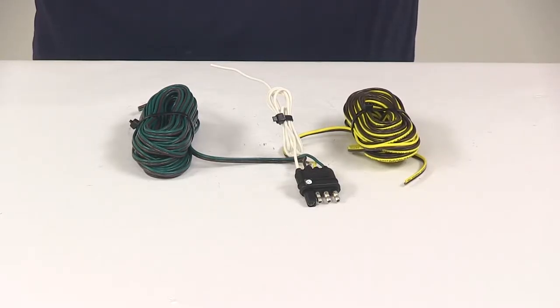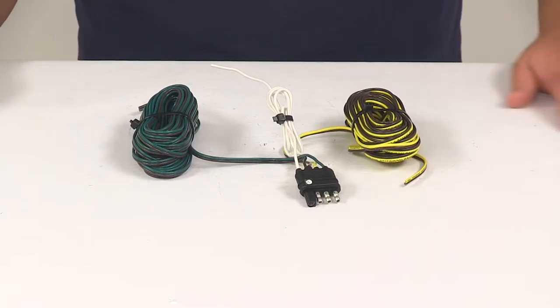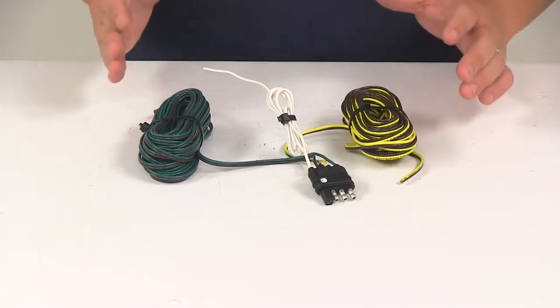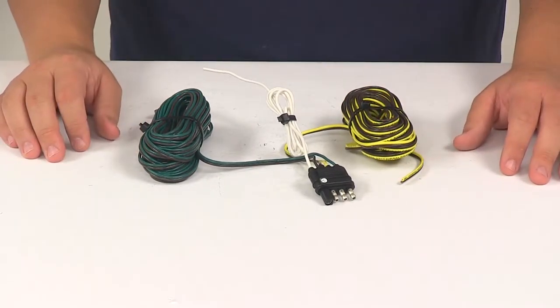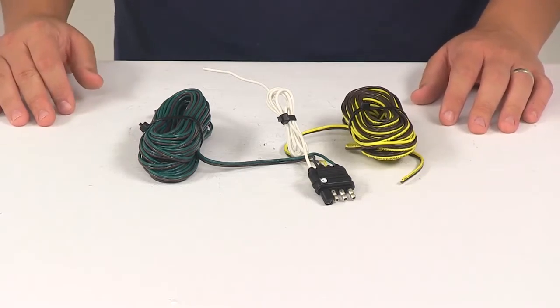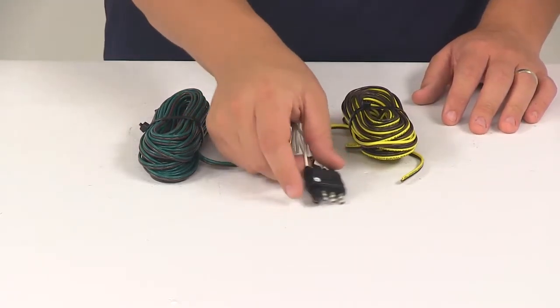Today we're going to be taking a look at the Hopkins Endurance 4-Way Flat Trailer End Wiring Harness. This is a simple, efficient method for rewiring your trailer with the 4-Way Flat Trailer End Connector.